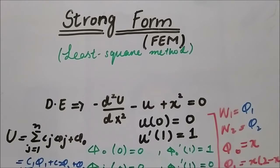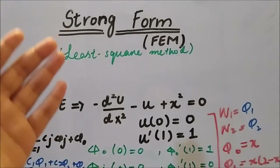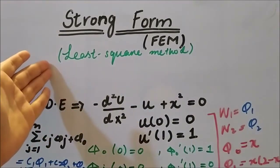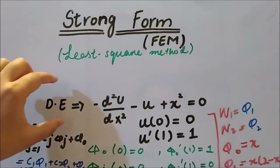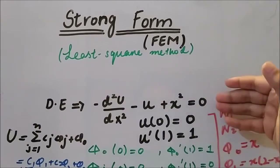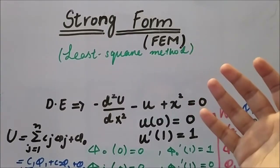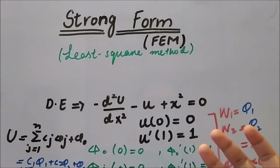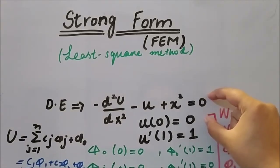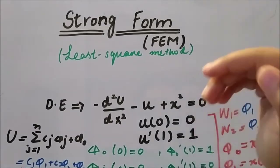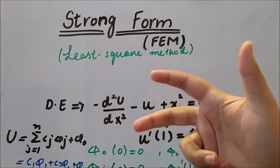In one of the previous videos we talked about how these four methods relate. This is the third method, and in upcoming videos we will discuss the fourth method — the co-location method. This video is about the Least Square Method and how we can solve the same differential equation. I am not changing the main differential equation or the boundary conditions across methods, because it will be easier to understand which method is more applicable in a given situation.